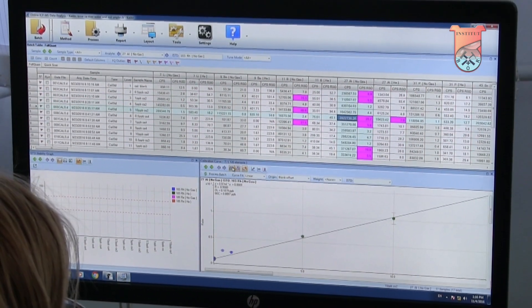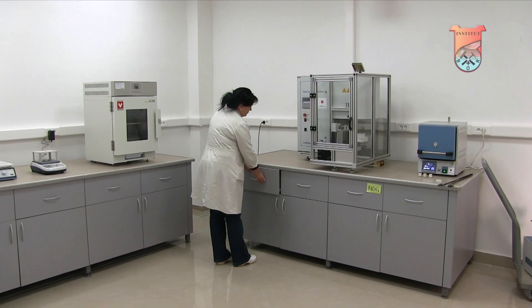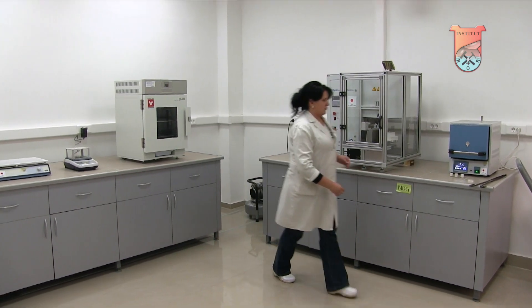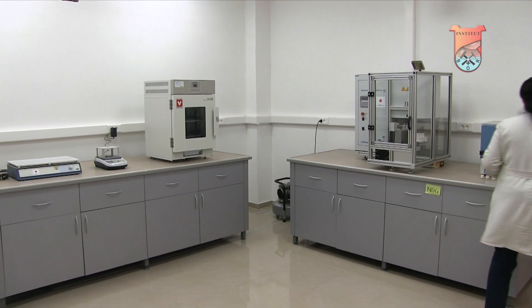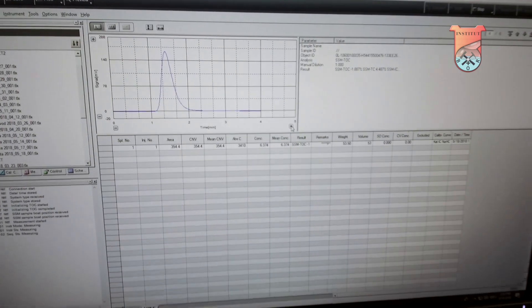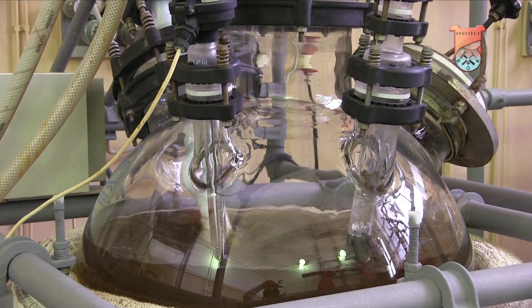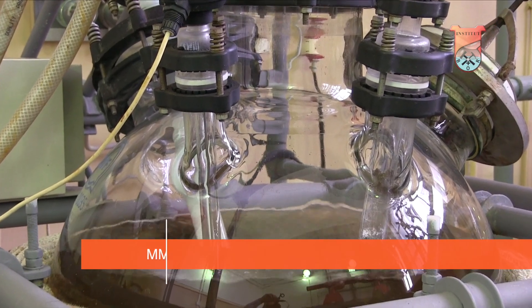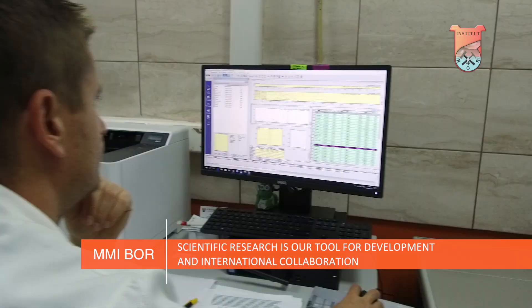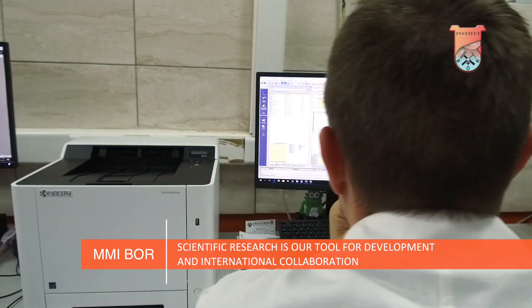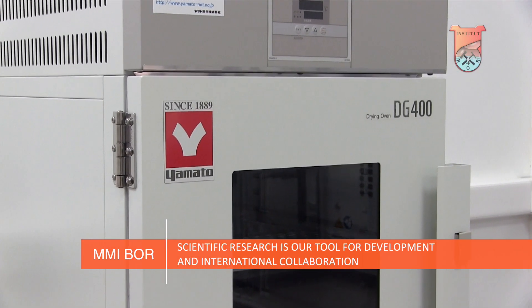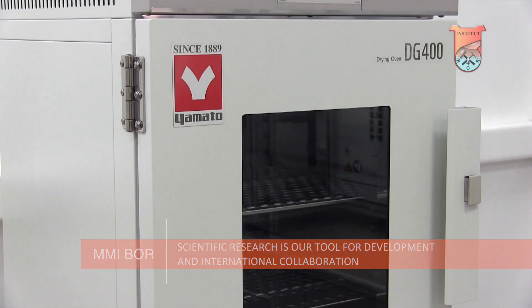This section realizes national projects in the field of technological development and basic science, as well as integral interdisciplinary research. There are also international projects, like projects of cross-border collaboration with Romania and Bulgaria, with European Union, a project within the Horizon 2020 framework, and a project with Japan.